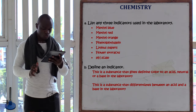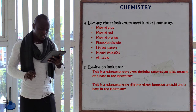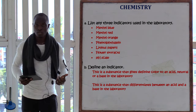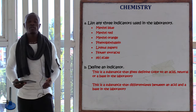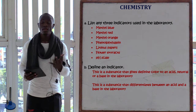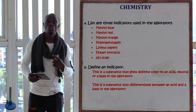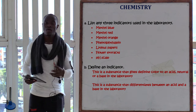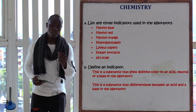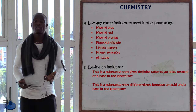List any three indicators used in the laboratory. We have many indicators: the natural indicator from flower extracts, litmus paper (blue and red), and bromothymol blue.